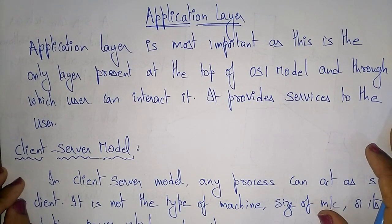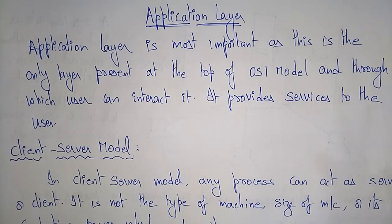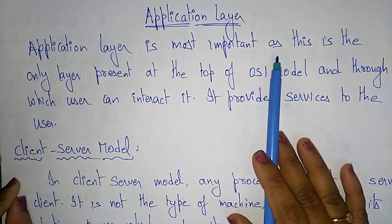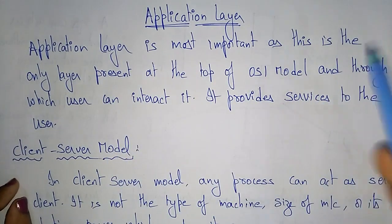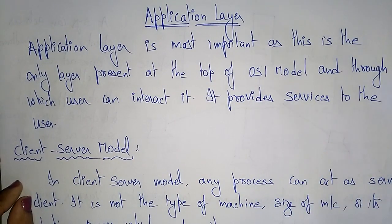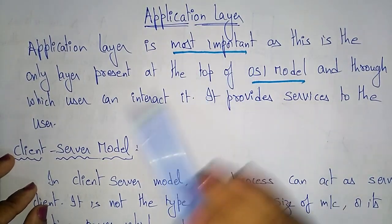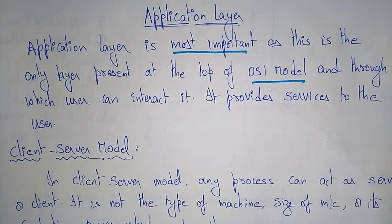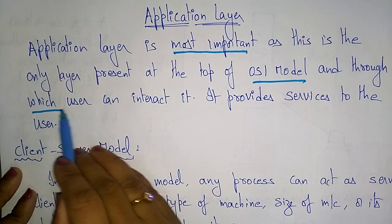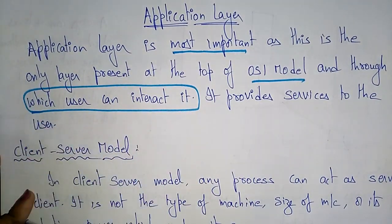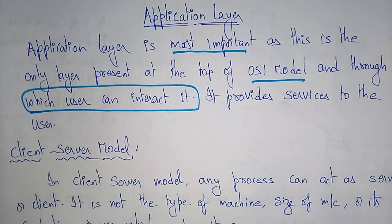Now let's see the application layer — how data communication will be established in the application layer. The application layer is the most important because it is the only layer present at the top of the OSI model, and through which users can interact with the system.